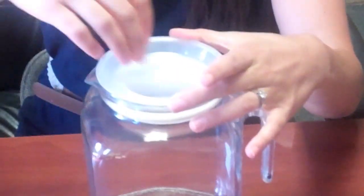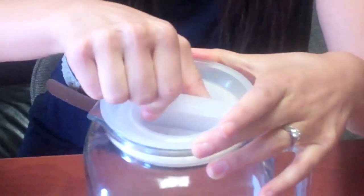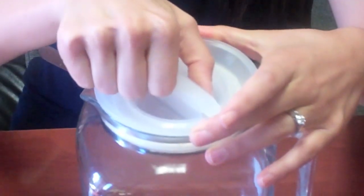So first, to get a tight seal, we want to put one hand down on the lid, use the other to twist clockwise, and you just twist it until it feels tight.